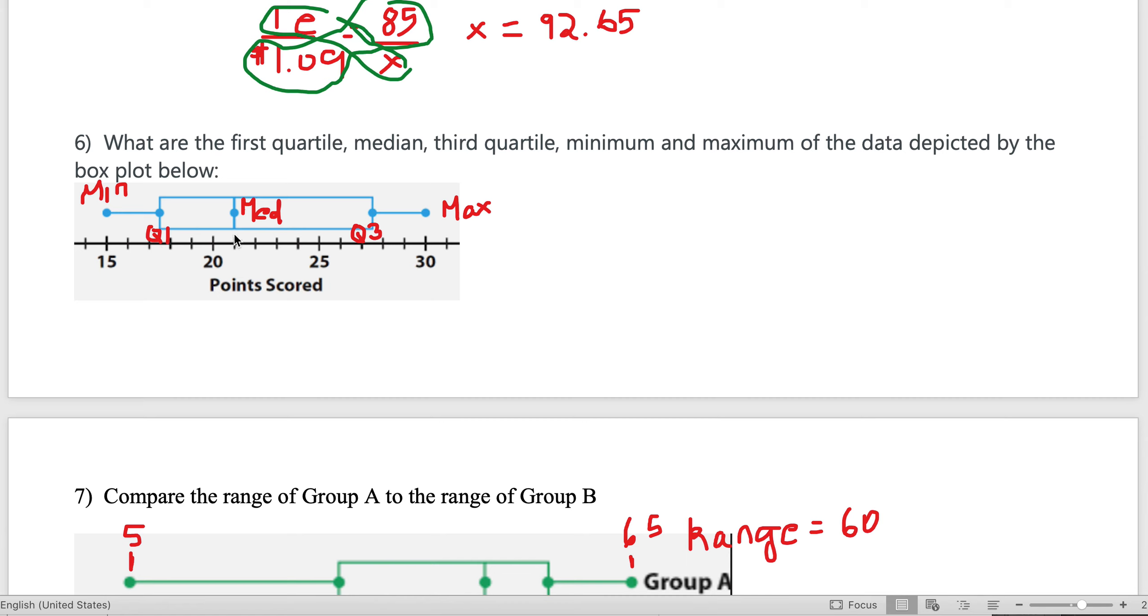So the minimum value is about 15, the first quartile is about 17.5, the median is about 21, third quartile is about 27.5, the maximum is about 30.